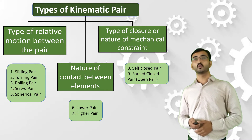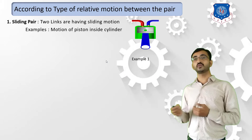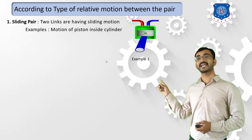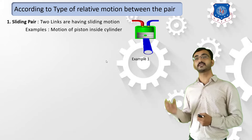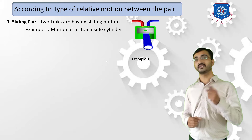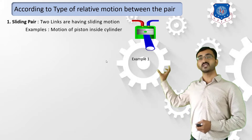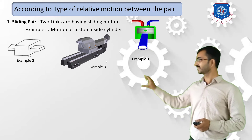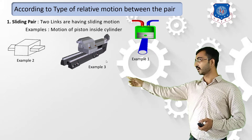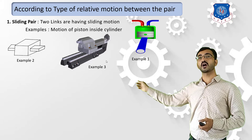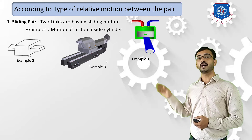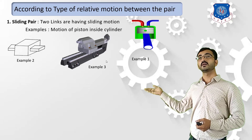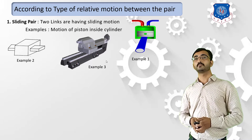The first classification is type of relative motion between links. The first type is known as a sliding pair — the first component will be sliding with respect to the other component. The first example is the piston and cylinder arrangement, where the piston is reciprocating inside the cylinder in a sliding motion. The second example is a rectangular block sliding inside a fixed block with a rectangular slot. The third example is a guideway and tailstock used in a lathe machine, where the tailstock slides along the guideway. These are the best examples of a sliding pair.